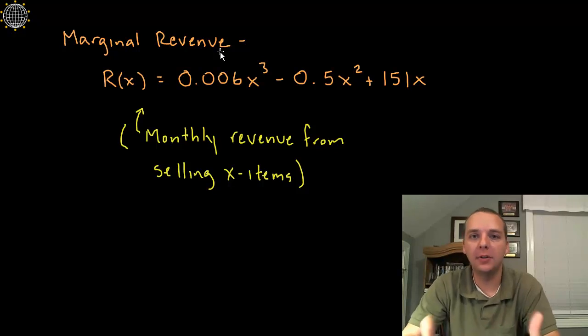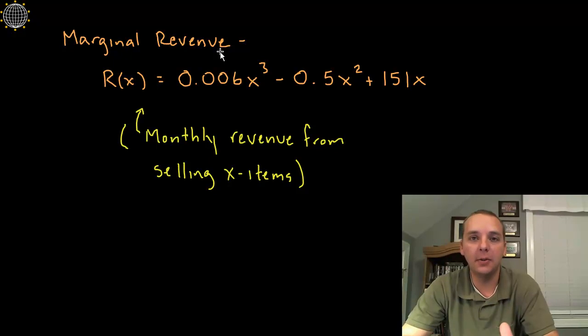Okay, here we're going to take a look at a marginal analysis problem, which is where we're trying to figure out how the revenue or cost or profit change as the production level changes, as we make more items. It could be toaster ovens or tennis shoes or it doesn't matter what it is. Marginal analysis is just trying to figure out what's happening to the revenue or profit or cost as there's changes in production levels.